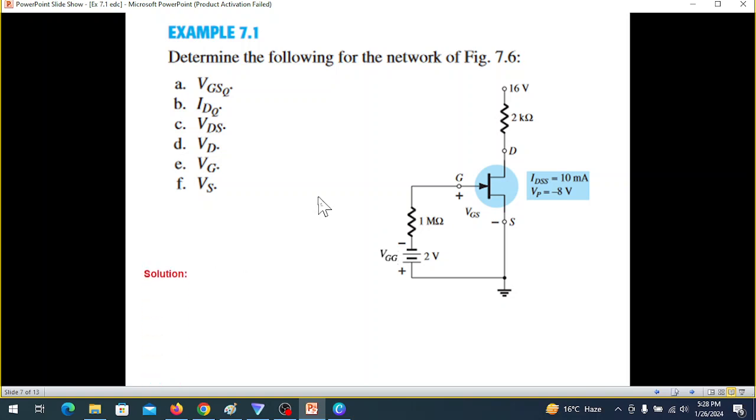First, we have to take help of this line to get VGSQ gate to source Q point. We have from this graph, it is nothing but equal to minus VGG. In this case VGG is 2, so from the graph we can write: VGSQ equals minus VGG equals minus 2 volts.